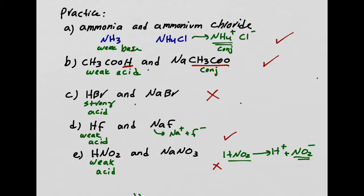Now that you know what a buffer solution is — you have to have a weak acid or weak base, and its conjugate, in order to be a buffer. Now we want to know why a buffer resists pH change. Why would it actually resist the pH change?